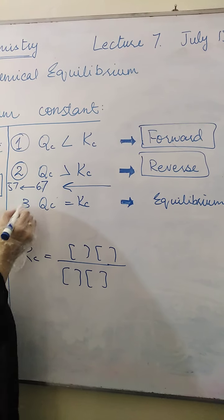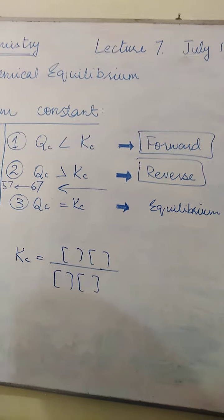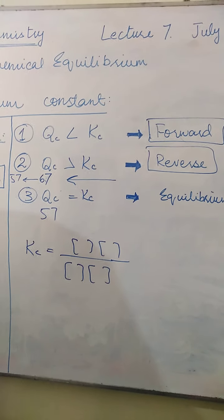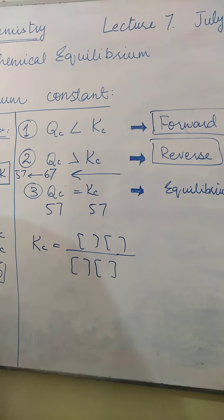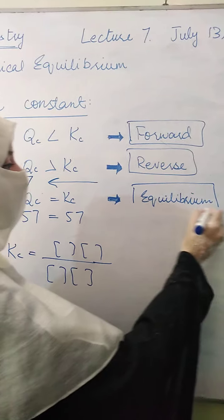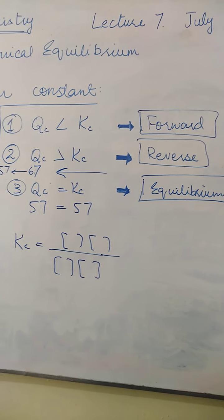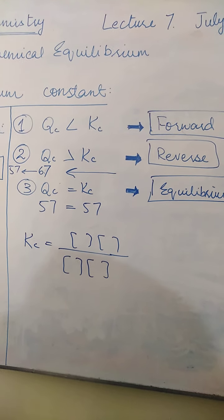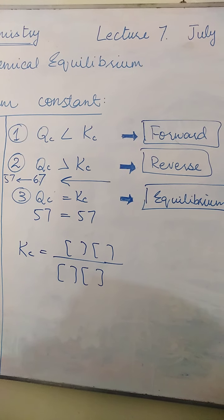Third condition: when Qc is equal to Kc. If at some particular time T we calculate Qc and the answer is exactly 57, and Kc is already 57 at 700 Kelvin, then when Qc equals Kc, we can say the reaction has achieved equilibrium. At that time, the reaction will maintain equilibrium. This is how you can predict the direction of a reaction — whether it is forward, reverse, or at equilibrium at any given time.